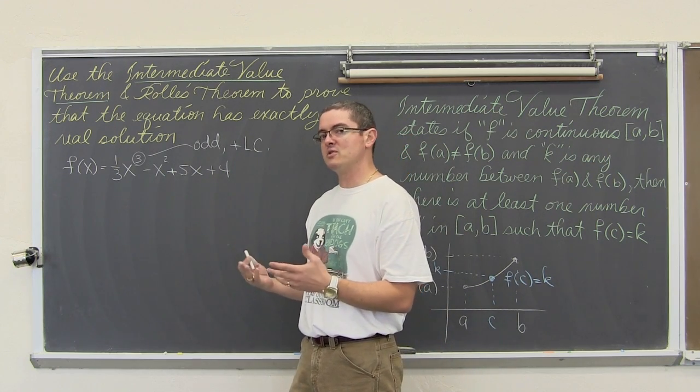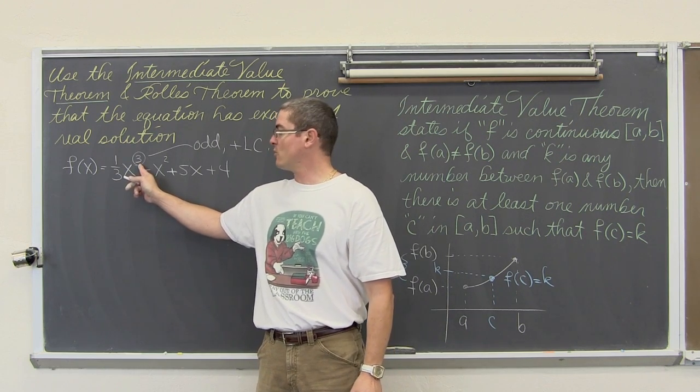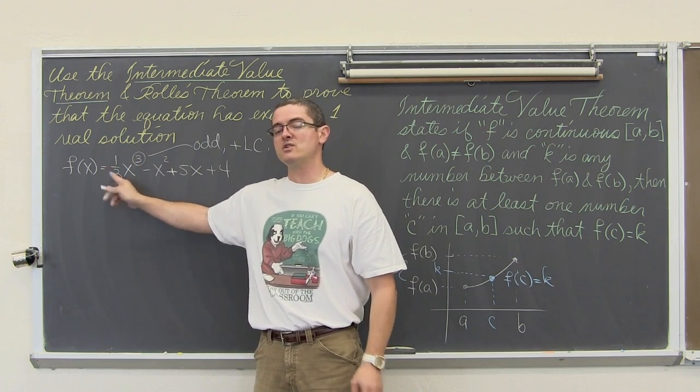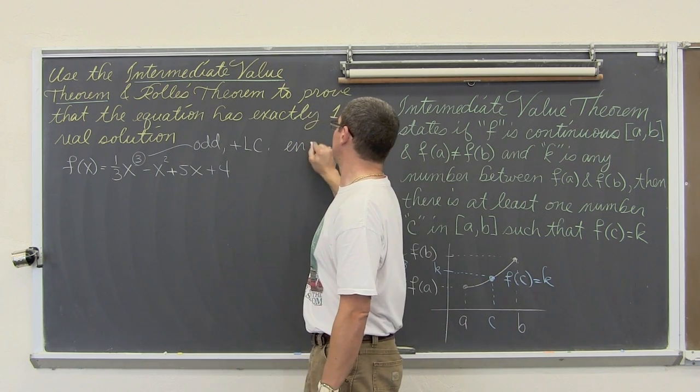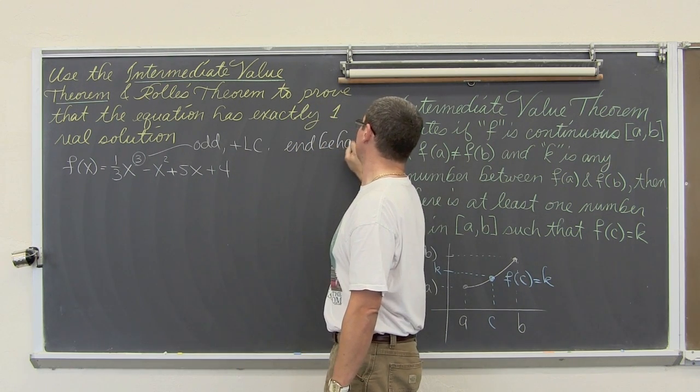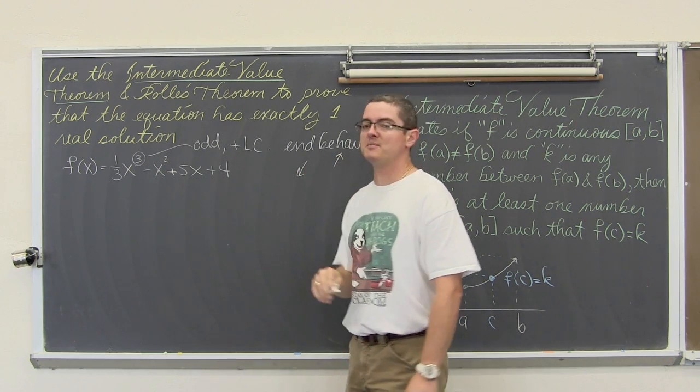But we know from Algebra 2 and pre-calculus that if we have a function with an odd degree and a positive leading coefficient, then its end behavior is down to the left and up to the right.